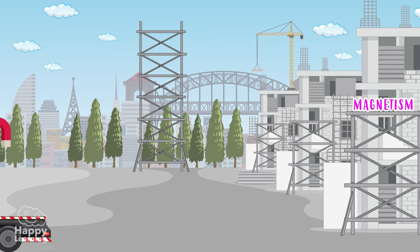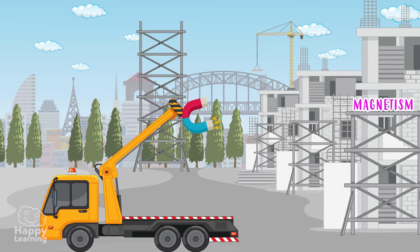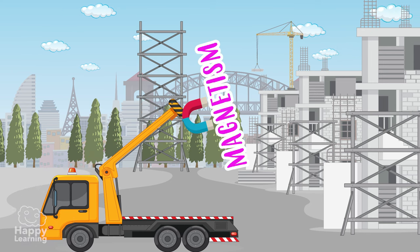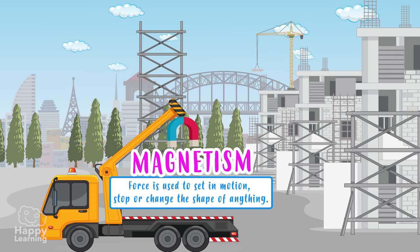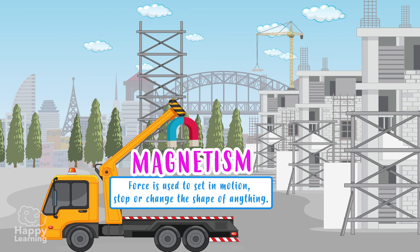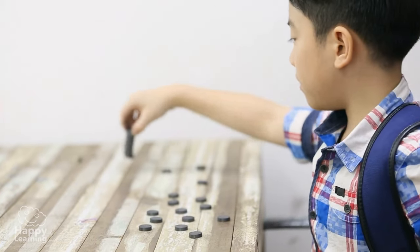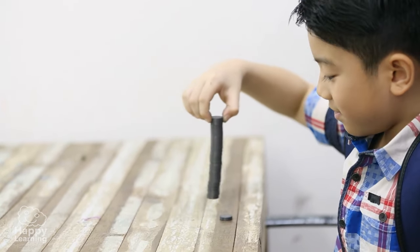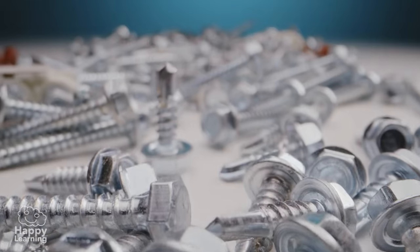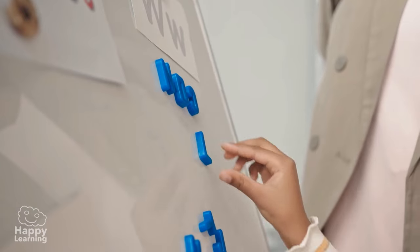The other non-contact force is called magnetism, and it is a force that magnets have to attract metal objects. Have you ever tried it? It's a very fun force! Magnets attract nails and screws, and we use them to stick notes, pictures, or drawings on the fridge.